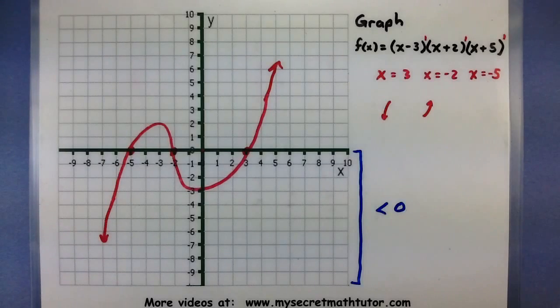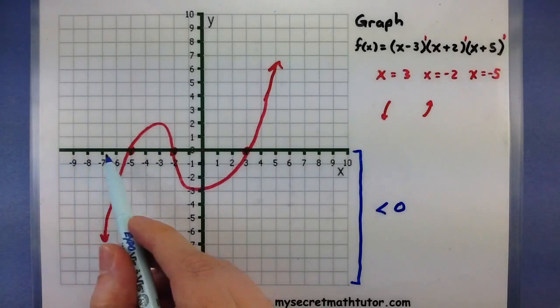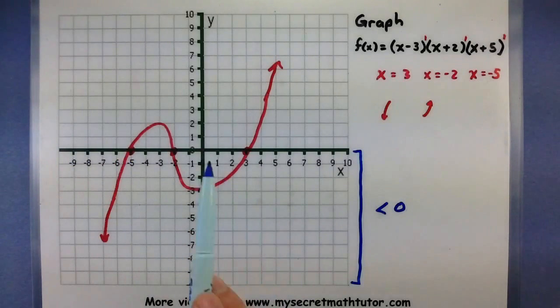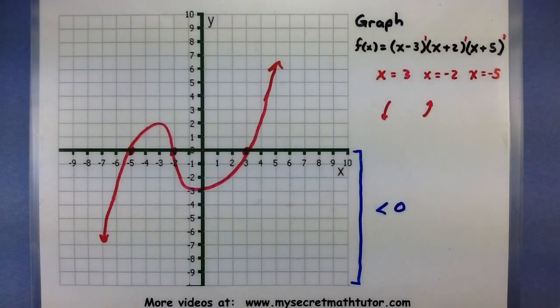So we get a few places where our graph is actually less than 0. Anytime we're using x values that are less than minus 5, our graph will be less than 0. And also, when we're between negative 2 and 3, it will also be less than 0.